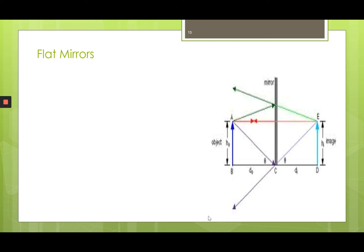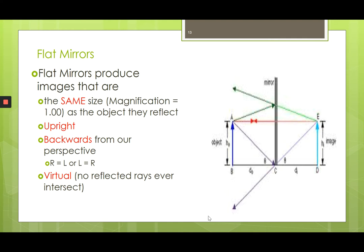So what about flat mirrors, also called plain mirrors? When you look in a plain mirror, your image appears upright — it doesn't appear inverted or upside down. You also look the exact same size. However far you are from the mirror, the image appears that same distance from the mirror. However, when you raise your right hand, the image looks like it's raising its left hand — so the image appears backward. This is why you could write a message backward and hold it up to a mirror and read it correctly.